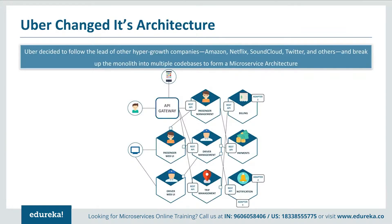This architecture also helped Uber to scale its services individually. The number of people searching for cabs is comparatively more than the number actually booking and making payments, so the passenger management microservice runs more processes than the payments microservice. Also, if any one feature goes down, no other microservice gets affected. Therefore, developers at Uber need not rebuild their applications again and again even if one microservice goes down.